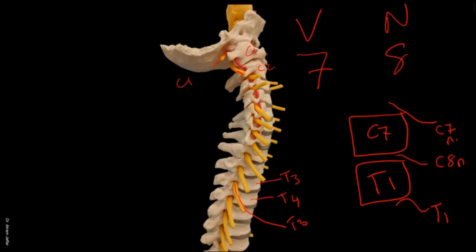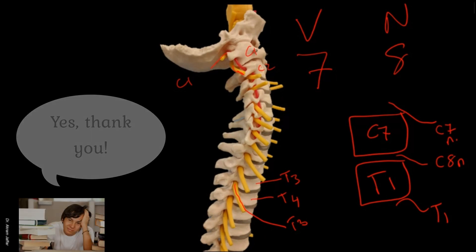The reason is that at the junction we have eight cervical nerves but only seven cervical vertebrae — the number of spinal nerves does not correspond to the number of cervical vertebrae. But in the thoracic region we have 12 by 12, in the lumbar we have five by five, and in the sacral we have five by five.